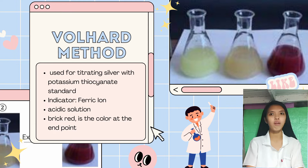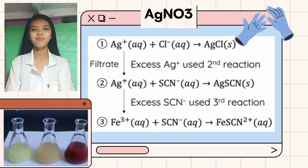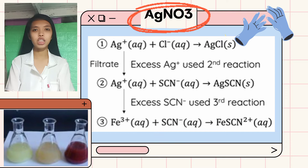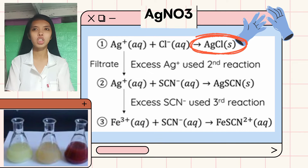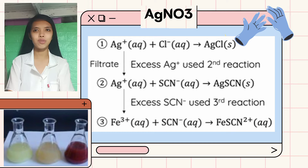Now let's proceed to the formation of a colored precipitate at the endpoint. First, excess silver nitrate is added to the chloride solution to produce silver chloride, which is a white precipitate shown in the first picture. When all chloride ions have reacted, filtration is performed to filter the precipitate, and the filtrate is titrated against sodium thiocyanate, which is placed in the burette.